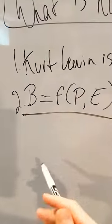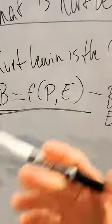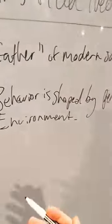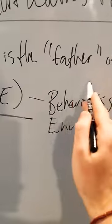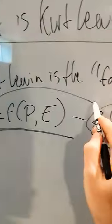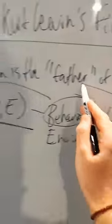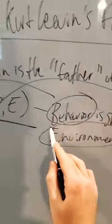So Kurt Lewin came up with this formula, which seems complicated, but behavior is shaped by personality and environment. Behavior being B, personality being P, and environment being E.